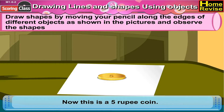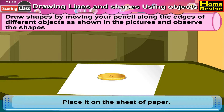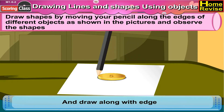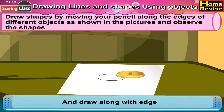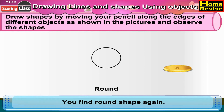Now this is a 5 rupee coin. Place it on a sheet of paper and draw along its edges. You find a round shape again.